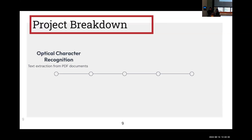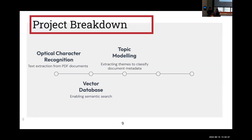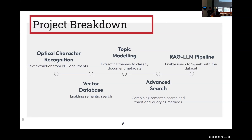The first step consisted of improving optical character recognition or OCR, which allows us to extract text from the PDF documents. Then we constructed a vector database, which enables semantic search and allows a user to search more efficiently. Then we moved on to topic modeling, which consists of extracting themes to classify document metadata, and then onto the advanced search where we combine semantic search and traditional keyword search methods. And then finally, we built our RAG — retrieval augmented generation — LLM pipeline, which allows us to essentially speak with the dataset.